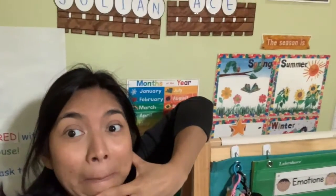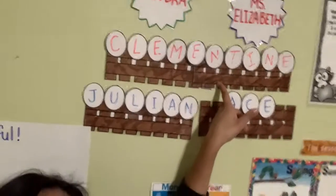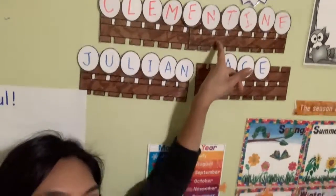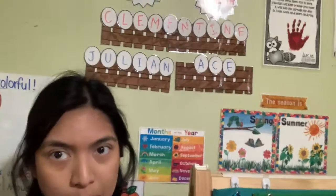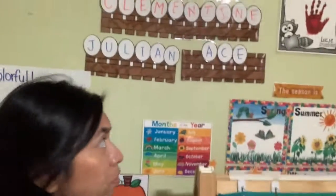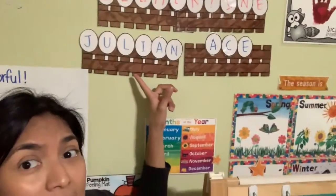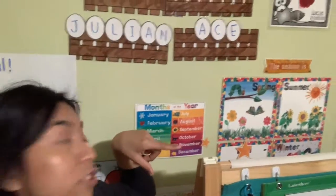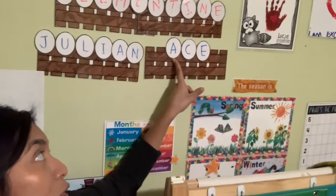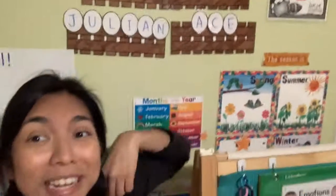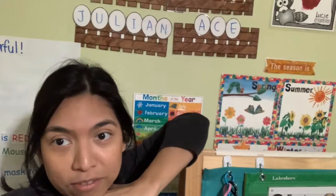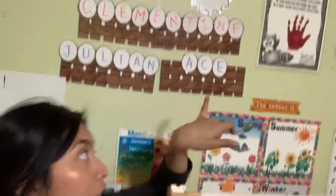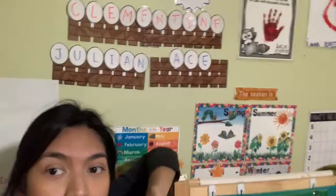Out of the three of you, who has the most letters in their name? That's right — Miss Clementine has ten letters, so her name has the biggest number of letters. She has ten. And who has the least, the smaller number of letters? That's right, that would be Mr. Ace. Mr. Ace has only three letters.